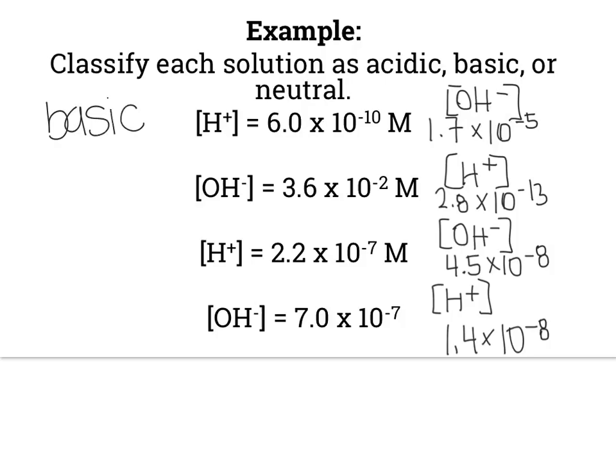That means that in this case, we have a negative 5 and a negative 10. This is mainly, you mean, look at the exponents. So that says that our negative 5 is larger than our negative 10, which means our first one is basic. For our second one, we have negative 2 and negative 13. Our more positive one would be negative 2, which again says our hydroxide is larger, so we have basic. We have negative 7 and negative 8. Negative 7 is barely more positive, but that means that we have more hydrogen, which means acidic. And negative 7, negative 8, similar concentrations, also acidic.